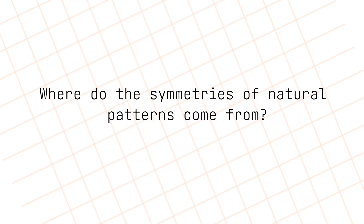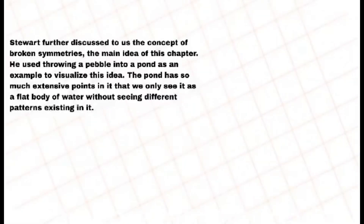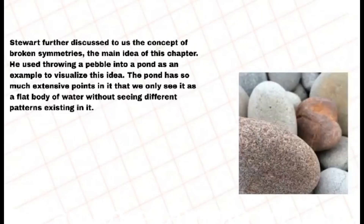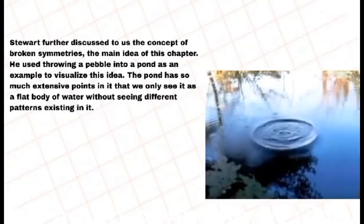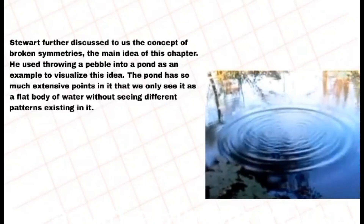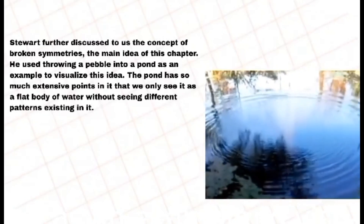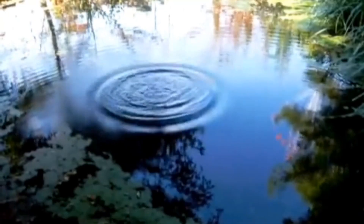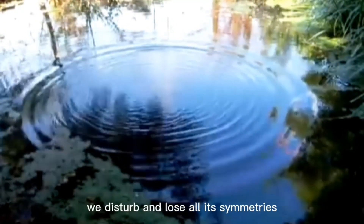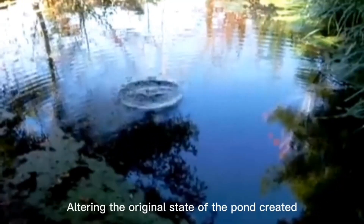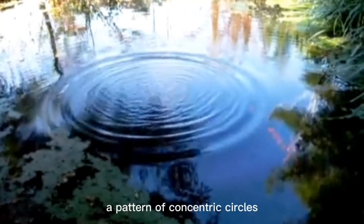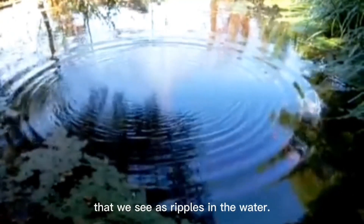But the question is, where do the symmetries of natural patterns come from? Stewart further discussed the concept of broken symmetries, the main idea of this chapter. He used throwing a pebble into a pond as an example. The pond appears as a flat body of water without visible patterns. As the pebble meets the surface, we disturb and lose all its symmetries except for the point where the pebble strikes, creating a pattern of concentric circles — the ripples we see in the water.